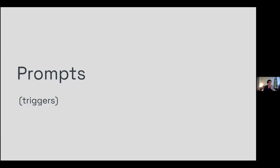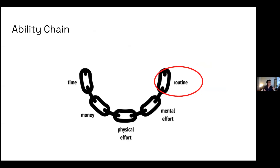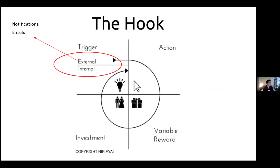Now let's talk about prompts. This relates to the routine aspect. I'm going to talk about the Hook Model — essentially how you build habit-forming technologies. It's split into four quadrants: trigger, action, variable reward, and investment. The trigger — which is what we're thinking about as a prompt — is split into two categories: internal and external. External prompts are notifications and emails, essentially.